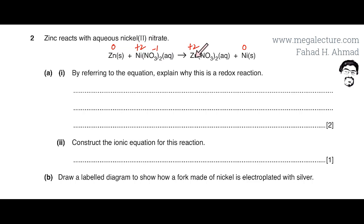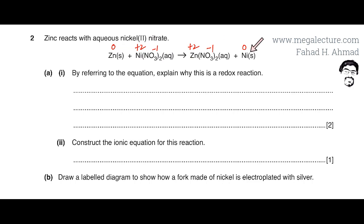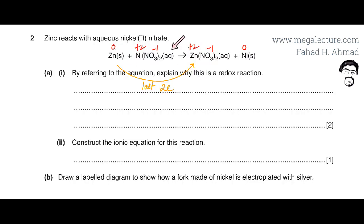Similarly on the product side, zinc nitrate has two nitrate ions each at minus one, so zinc must be plus two. Nickel metal is again neutral with zero charge. So zinc goes from zero to plus two, meaning it loses two electrons.